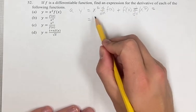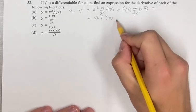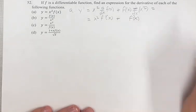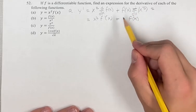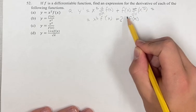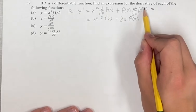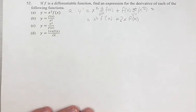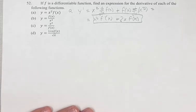Simplifying this, we get x squared times the derivative of f of x, written in this form, plus f of x times the derivative of x squared. We have a power function, so you bring down the exponent into the coefficient, and then you have x to its new exponent, which is the old one minus 1, so 2 minus 1 makes this x to the first, which is just x. So this is our derivative for a.